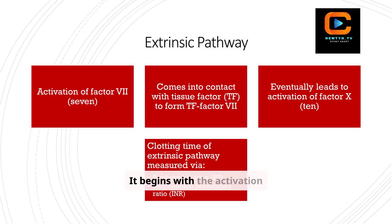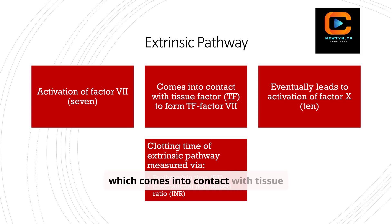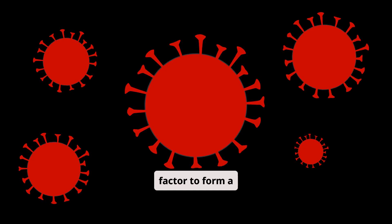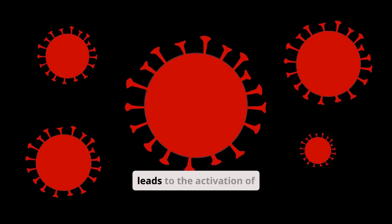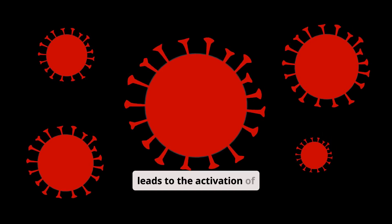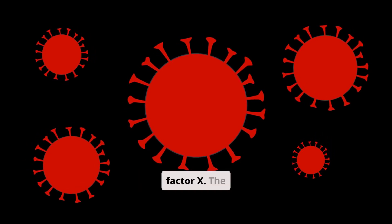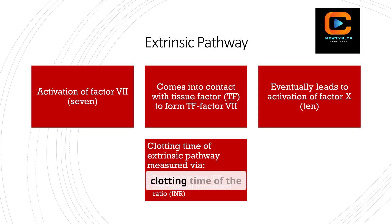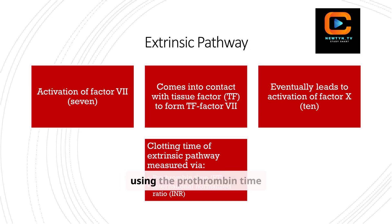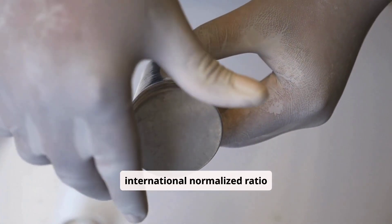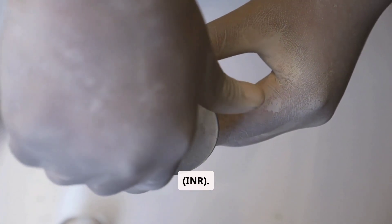Let's take a closer look at the extrinsic pathway. It begins with the activation of factor 7, which comes into contact with tissue factor to form a complex. This eventually leads to the activation of factor X. The clotting time of the extrinsic pathway is measured using the prothrombin time (PT) and the international normalized ratio (INR).